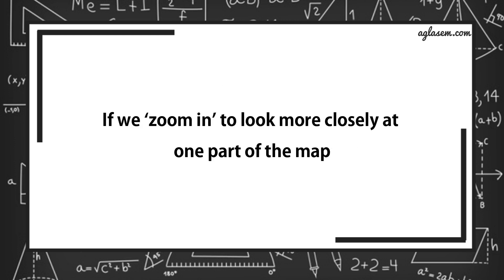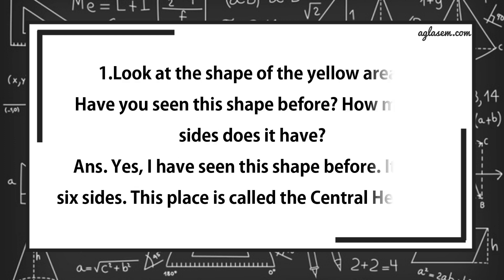If we zoom in to look more closely at one part of the map. Question number 1 says, look at the shape of the yellow area. Have you seen this shape before? How many sides does it have? Answer is, yes, I have seen this shape before. It has 6 sides.